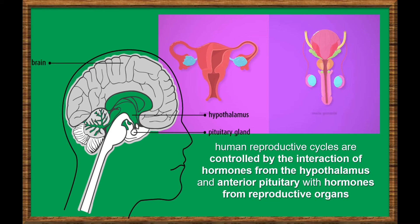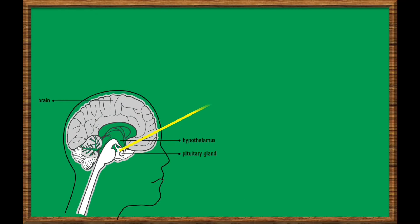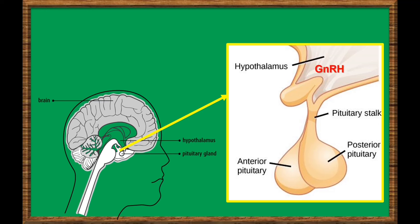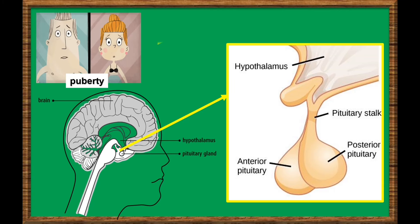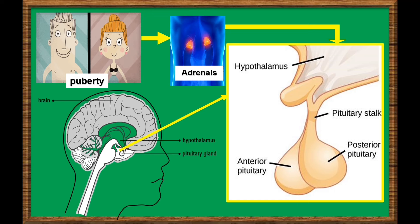In both sexes, the hypothalamus monitors and causes the release of hormones from the pituitary gland. When the reproductive hormone is required, the hypothalamus sends a gonadotropin-releasing hormone, or GnRH, to the anterior pituitary gland. This causes the release of follicle-stimulating hormone, or FSH, and luteinizing hormone, or LH, from the anterior pituitary gland into the blood. Remember that the body must reach puberty in order for the adrenal glands to release the hormones that must be present for GnRH to be produced.